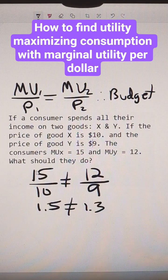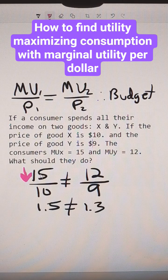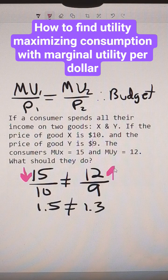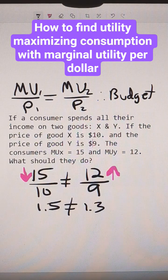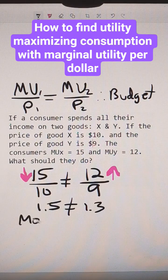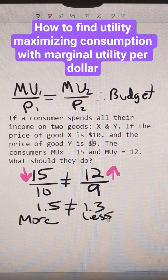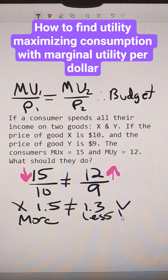So what we want is for this numerator to come down. To do that, I want more units of good X, and I want this number to increase, so I want less units of good Y. I want more of the bigger number and less of the smaller number — so we want more X and less Y.